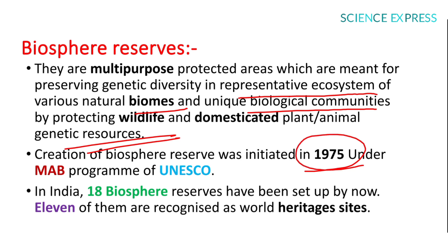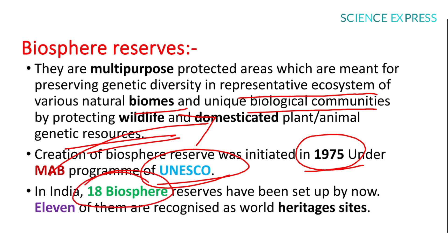Creation of biosphere reserves was initiated in 1975 under the MAB program — Man and Biosphere program — of UNESCO. In India, at present, 18 biosphere reserves are present; 11 of them are recognized as World Heritage Sites and 7 are domesticated.